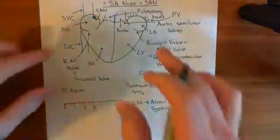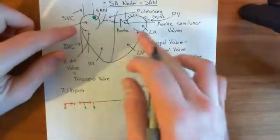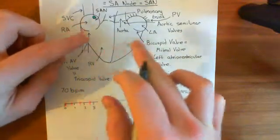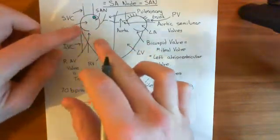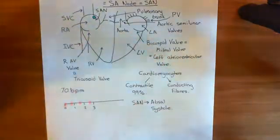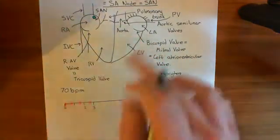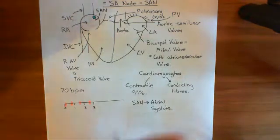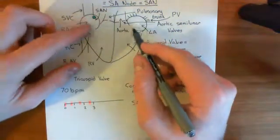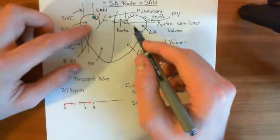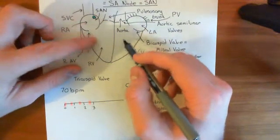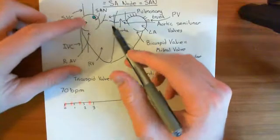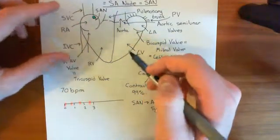The atrioventricular valves — the tricuspid valve between the right atrium and the right ventricle, and the bicuspid or mitral valve between the left atrium and the left ventricle — those allow the blood to flow in this direction. They're one-way gates that allow blood to flow from the atria to the ventricles. So now the blood has gone into the right and left ventricles.